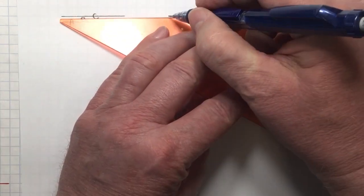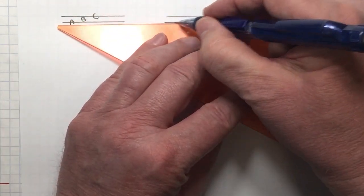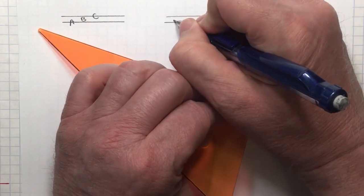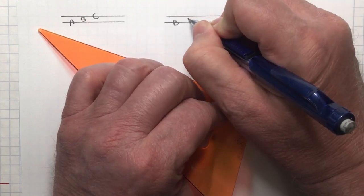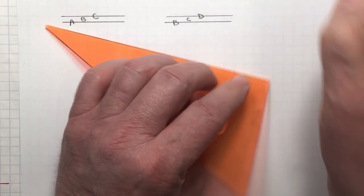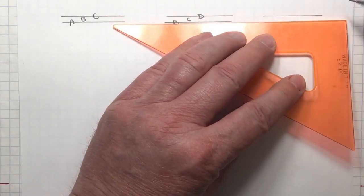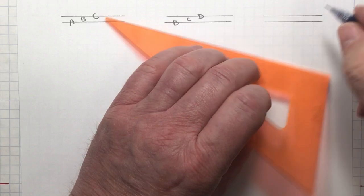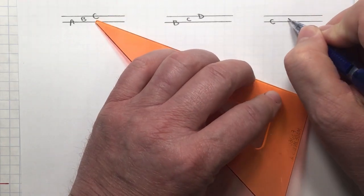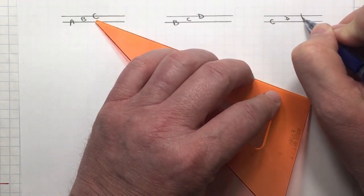Or I could label line one B, next space C, next line D. Or line one could be C, next space D, next line E.